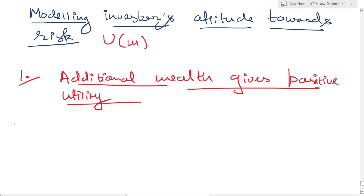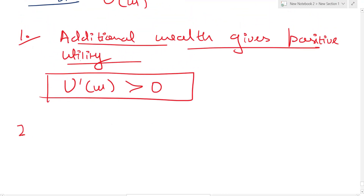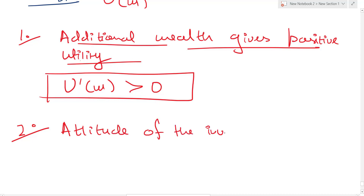Additional wealth gives positive utility to any form of investor — this will be our assumption. How do we represent this? We say that the rate of change of utility with wealth, that is U'(W), which is just called marginal utility, is positive. So if I increase the wealth, the utility will increase. The first axiom just says that more wealth is always preferred by the investor, and this is general — applicable to all sorts of investors.